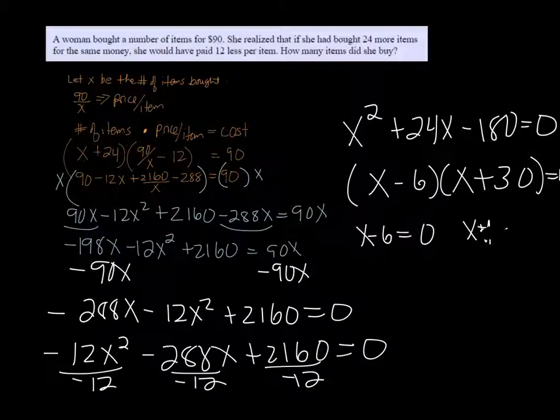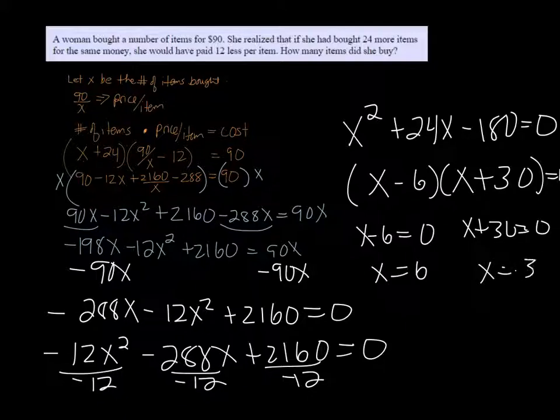Oh, let me erase here. X plus 30 equals zero and X minus 6 equals zero. We get two answers: X equals 6 or X is negative 30.